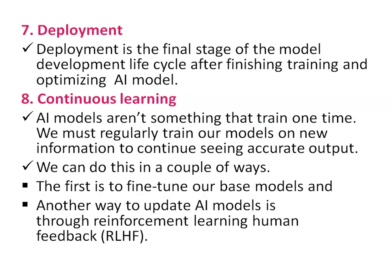Step seven is deployment, the final stage of the model development cycle after finishing training and optimizing the AI model. The last step is continuous learning — AI models are not trained one time. We must regularly train our models on new information to continue seeing accurate output. We can do this by fine-tuning our base model, or through reinforcement learning with human feedback.